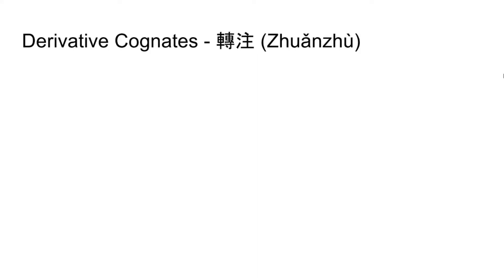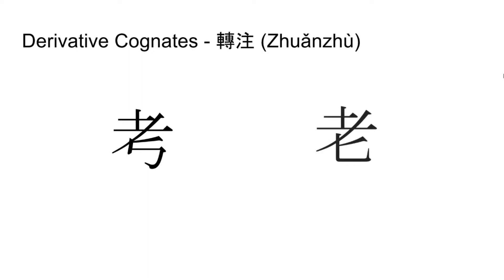Much like Jiajie, Zhuanzhu also contains loaned characters, but it is based on the idea that certain characters are similar in appearance due to historically similar meaning. While modern scholars reject the idea that this script was a systematic way of forming characters, it holds historical significance in stressing etymological fraternity, such as between Kao, meaning 'verify,' and Lao, meaning 'old,' which had similar pronunciations and likely originated from the same word meaning an elderly person. Though, once again, the significance of this script is disputed and is not well understood.